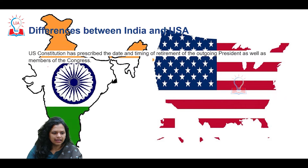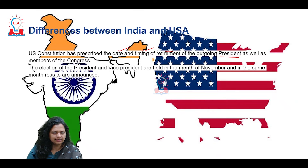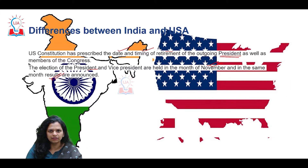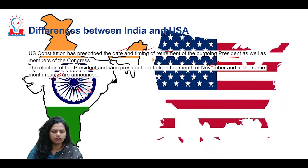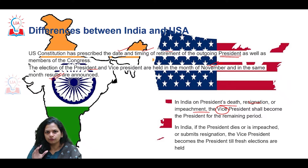The US constitution specifies a fixed date and timing for presidential elections — fixed to be held in the month of November, with results also announced in November. Elections and results are fixed to occur every tenure in November. However, in the case of India, there is no such fixed time or certainty as in the United States. In the event of a president's death, resignation or impeachment, the vice president serves that period.